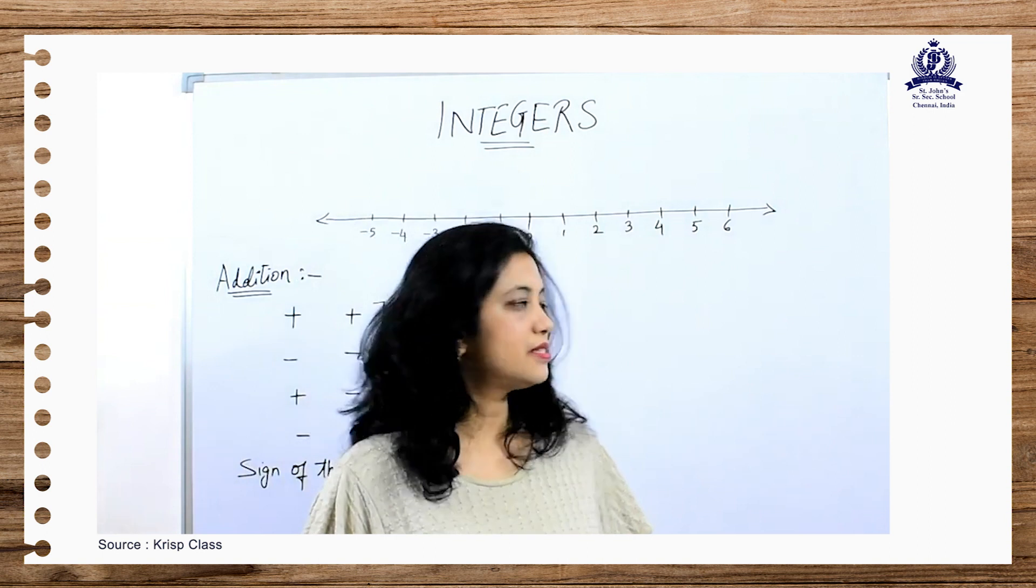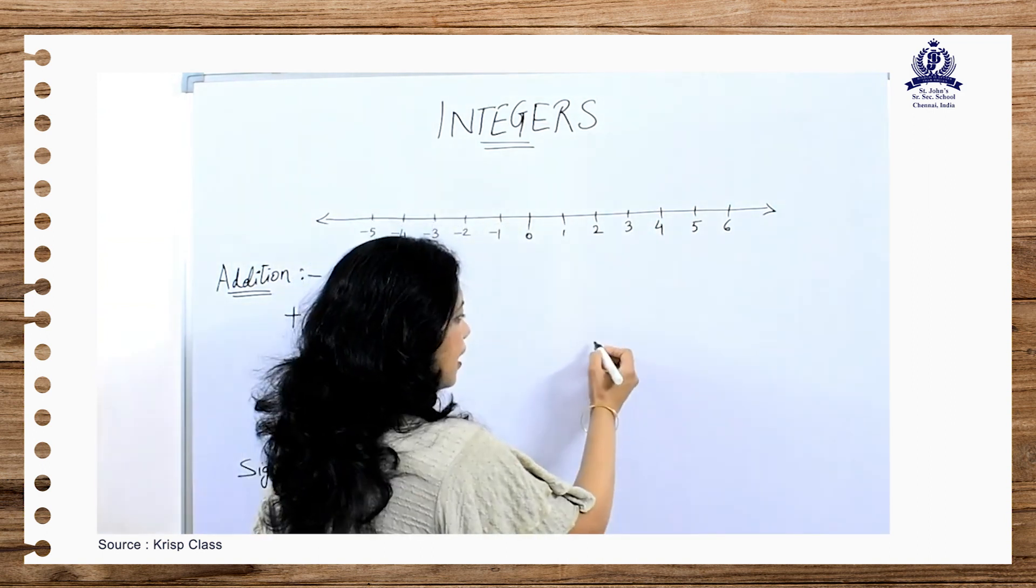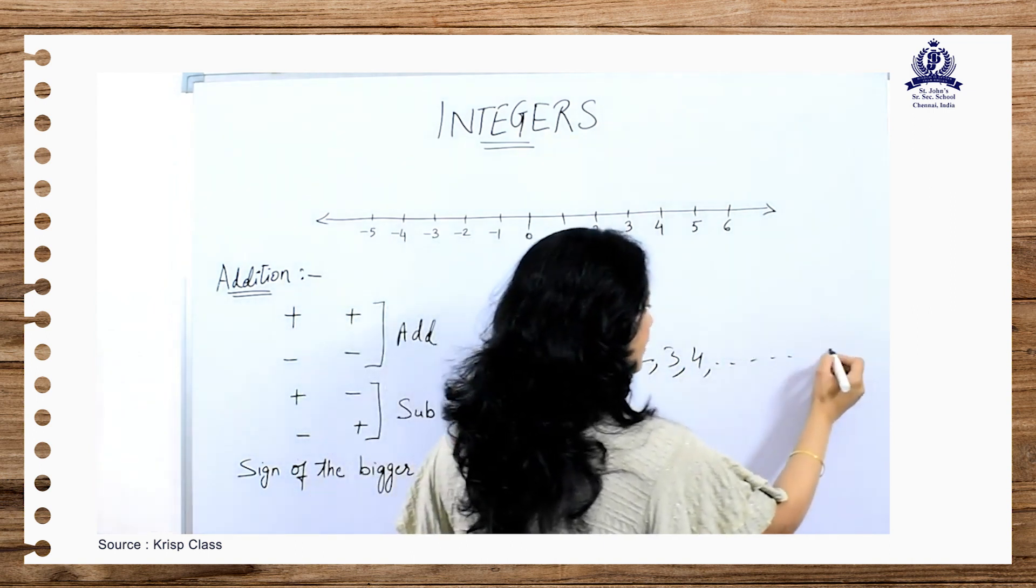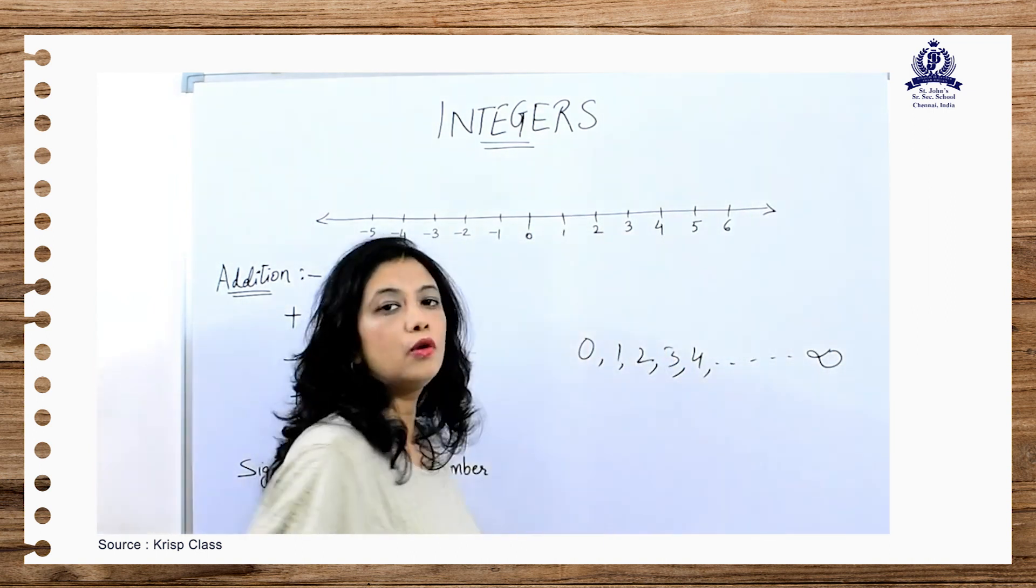We know what are whole numbers. Whole numbers are numbers from 0, 1, 2, 3, 4 till infinity. All these are whole numbers.